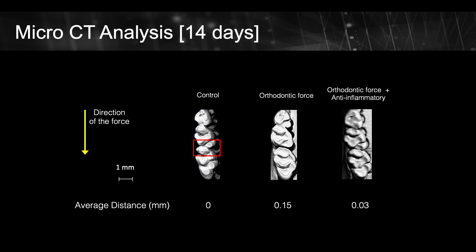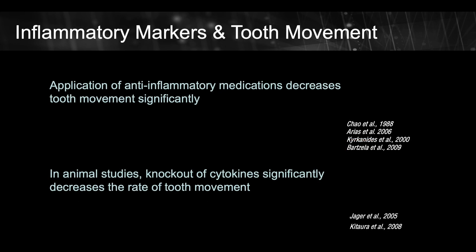But what scientific observations can support this theory? Based on this theory, if we use anti-inflammatory medication, one would expect the rate of tooth movement to decrease significantly. In experiments applying orthodontic forces on teeth of experimental animals, the tooth moves as expected. But when these orthodontic forces are combined with anti-inflammatory medication, the tooth movement stops. Also, researchers who knocked out some of the genes in animals — meaning the animal could not produce the inflammatory markers important in early events of orthodontic tooth movement — noticed that tooth movement decreased significantly.